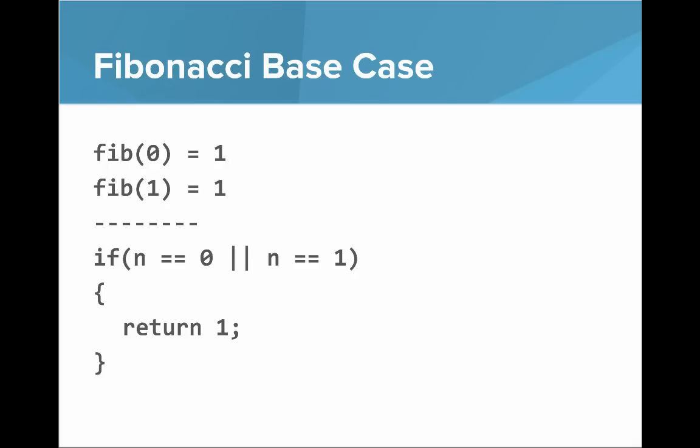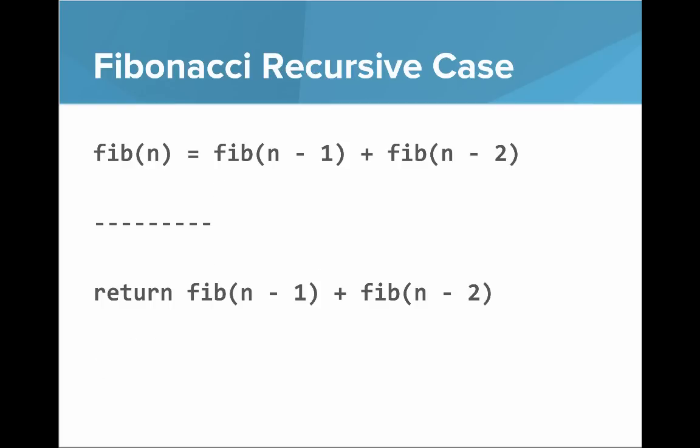What's the base case? Well, if n is 0 or 1, then Fibonacci of that is 1. So there you go, you can see we have the code for that as well. And here's the recursive case, which says that Fibonacci of n is Fibonacci of n minus 1 plus Fibonacci of n minus 2. And there's the code, it looks very similar.